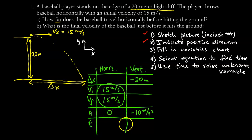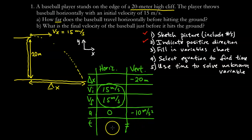An important point: the time on the horizontal and the time on the vertical are always equal, because the final vertical velocity occurs at the same time as the final horizontal velocity. Time is the only variable shared between both the vertical and horizontal analyses.